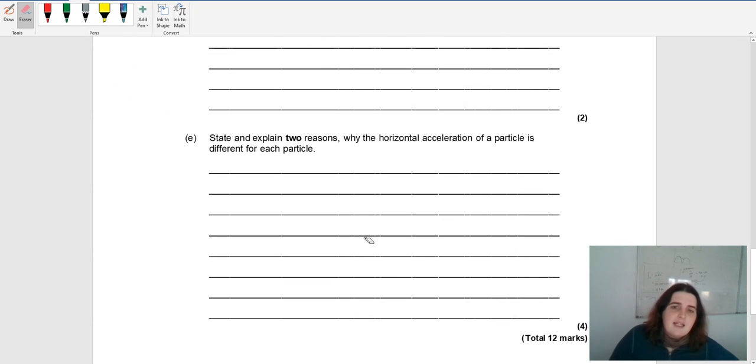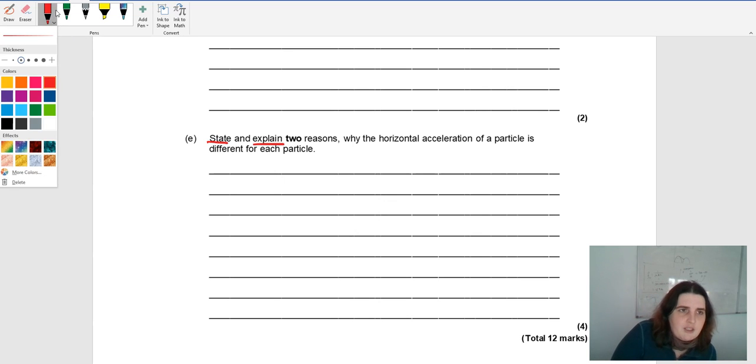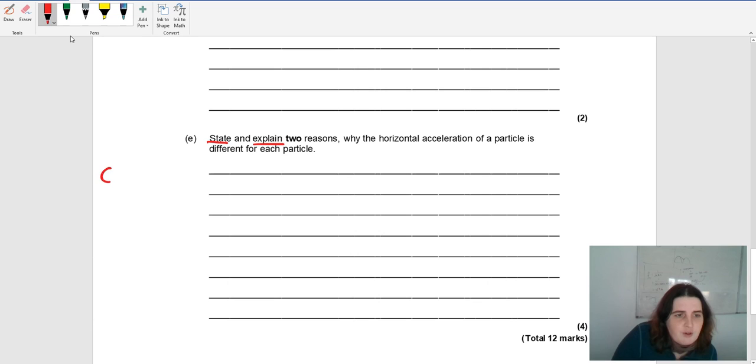State and explain two reasons why the horizontal acceleration is different for each particle. There are two reasons your acceleration is going to be affected. You've got E equals F over Q, and that's going to be MA over Q. The two things that could change, since your field strength's the same, are your mass or your charge.